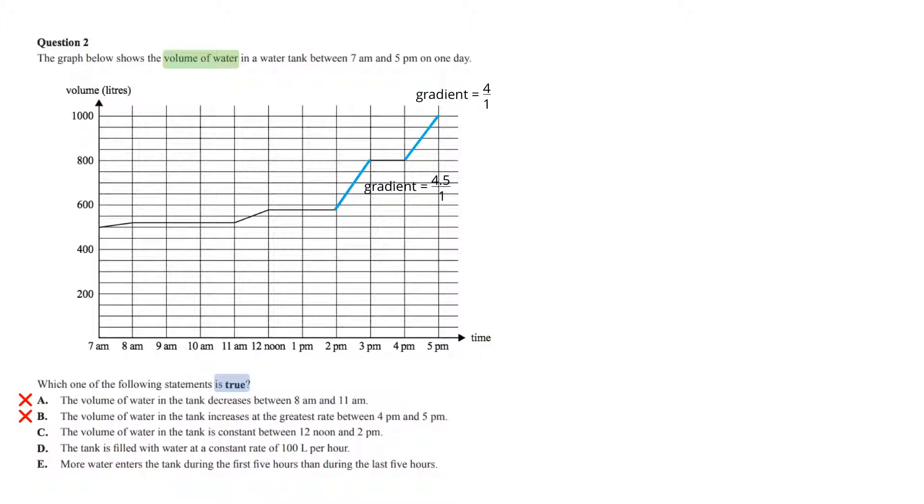Option C. The volume of water in the tank is constant between 12 noon and 2pm. Now, this is true because the line has a zero gradient, so the answer we are after is Option C.